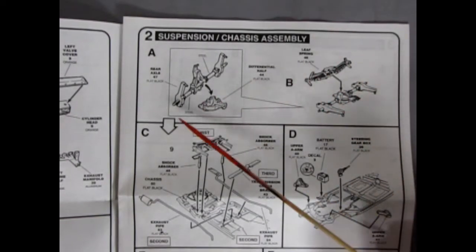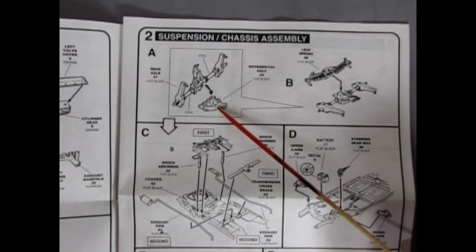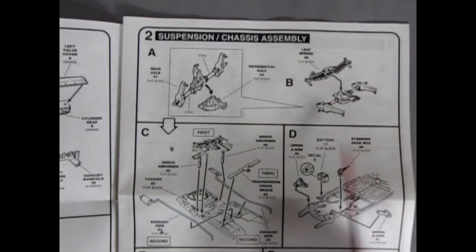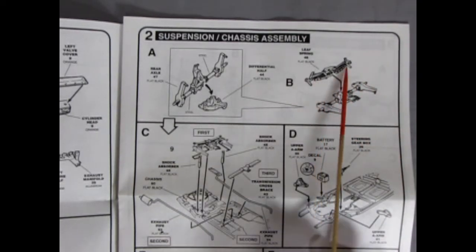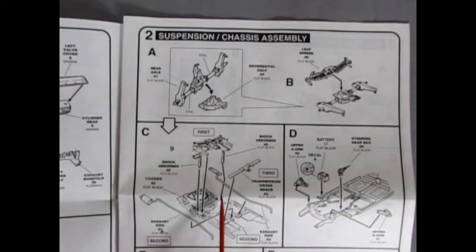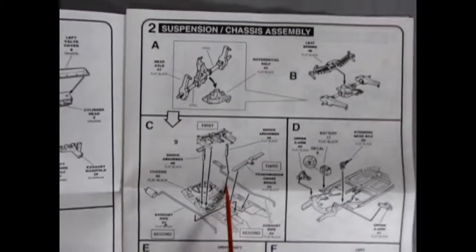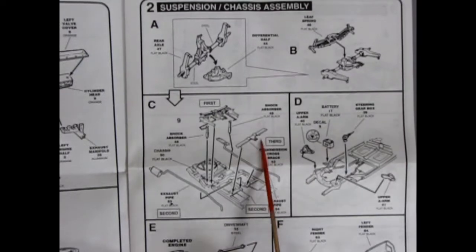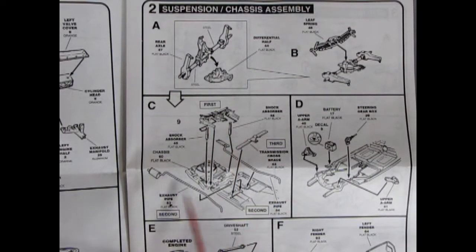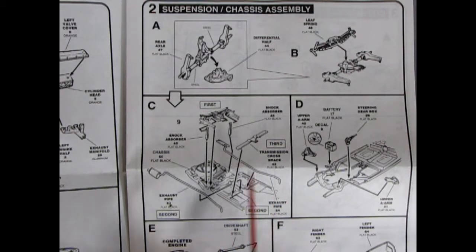Our rear axle assembly here going on to our differential cover. And then you glue on the rear relief springs, which has the sort of Model T-style spring in there. And then, here's our chassis with the transmission crossmember, the differential going in, your shock absorbers, and your exhaust pipes. It tells you which order to put it in. So first, you're going to drop down your differential. Second, you glue on your pipes. And third, you put in the crossmember.